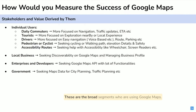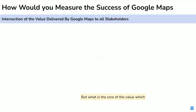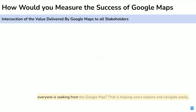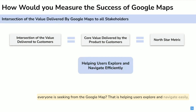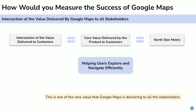These are the broad segments using Google Maps. But what is the core value that everyone is seeking from Google Maps? That is helping users explore and navigate easily. This is the core value that Google Maps delivers to all its stakeholders.